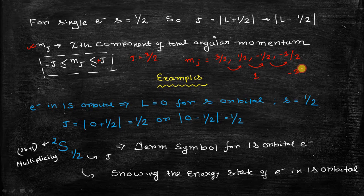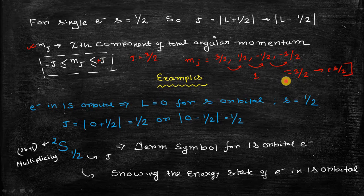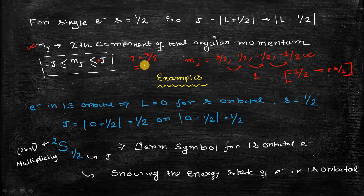So mJ can vary between −3/2 and +3/2, giving a total of four mJ values for J equal to 3/2. Now let's see some examples of how to derive the term symbol for different electronic states of hydrogen atom.